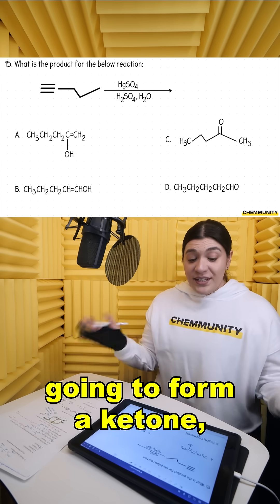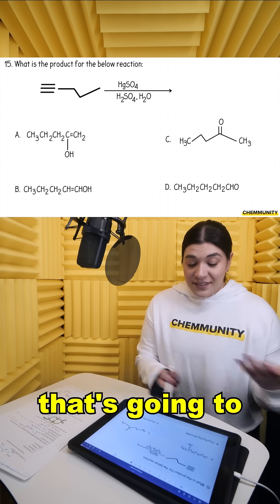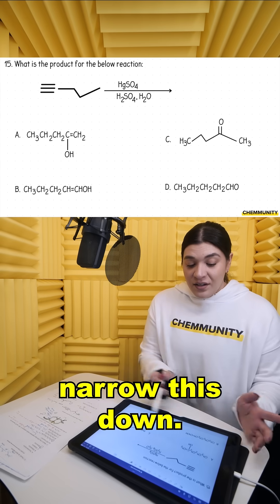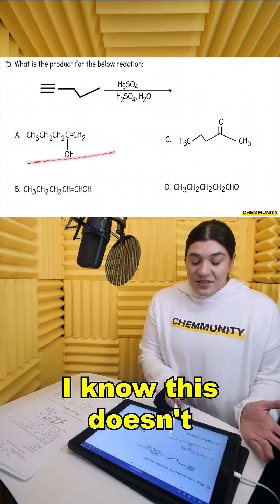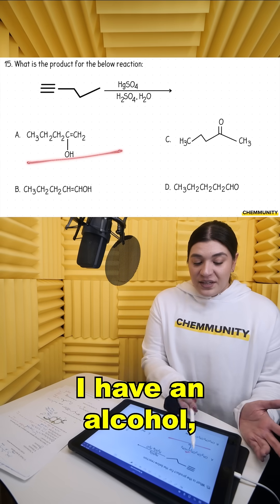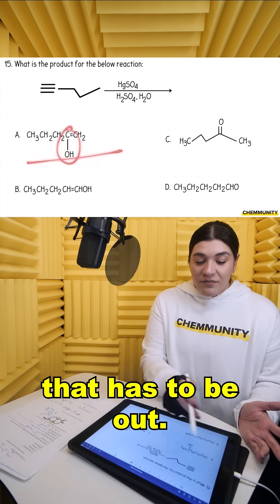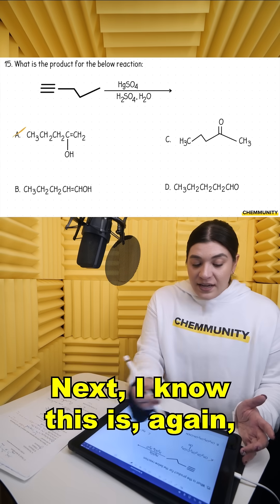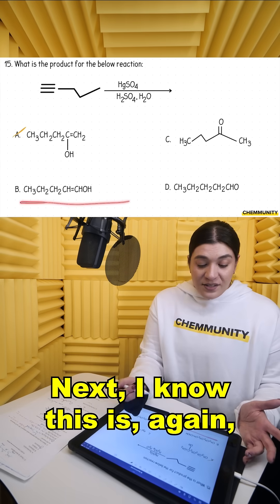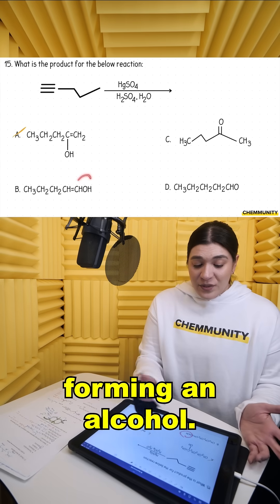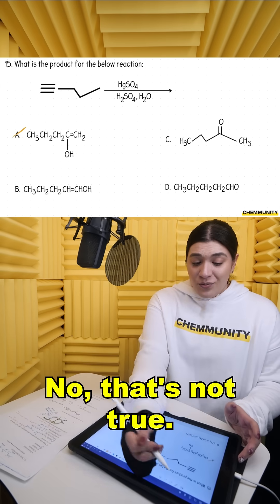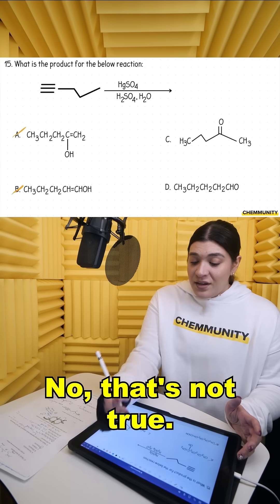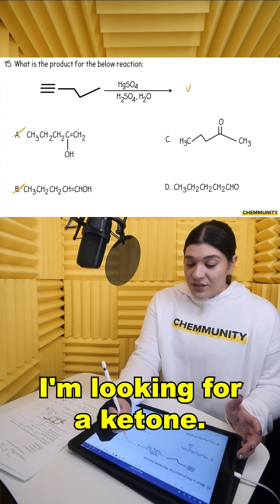Now that we know it's going to form a ketone, that's going to narrow this down. I know this doesn't form a ketone — I have an alcohol, so that has to be out. Next, I know this is forming an alcohol. No, that's not true. I'm looking for a ketone.